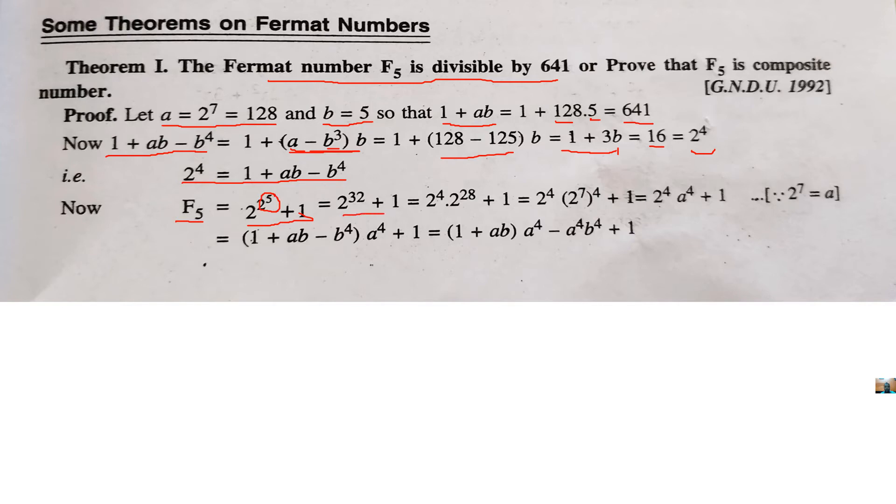It is written as 2 raised to power 32 plus 1. We can break this 32 into 2 parts, 4 plus 28. In multiplication, it is written like this. Now, 2 raised to 4 is separated, whereas 2 raised to power 28 is broken like 7 into 4. Now, we know that 2 raised to power 7 is the value of a. So, use here a raised to 4.